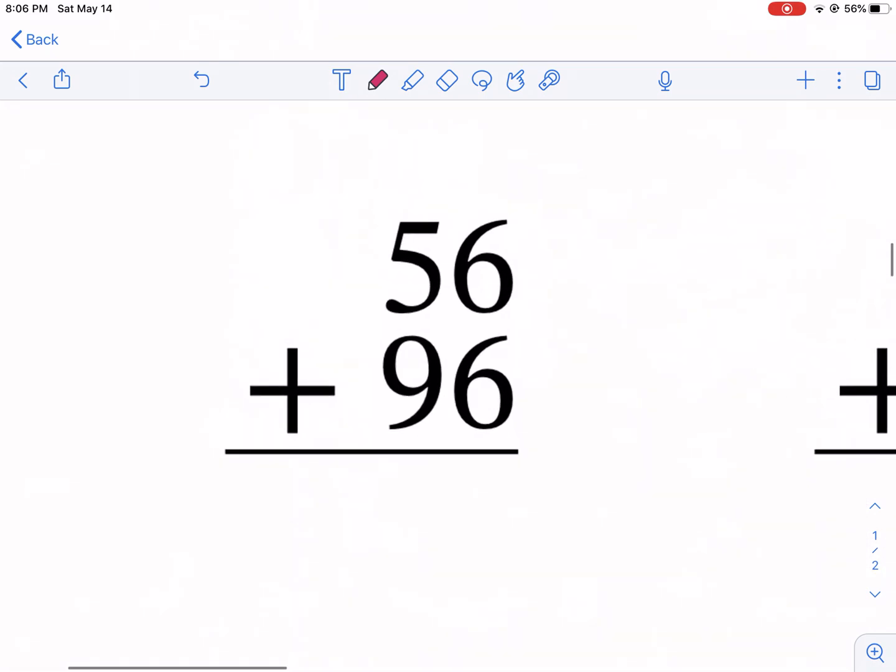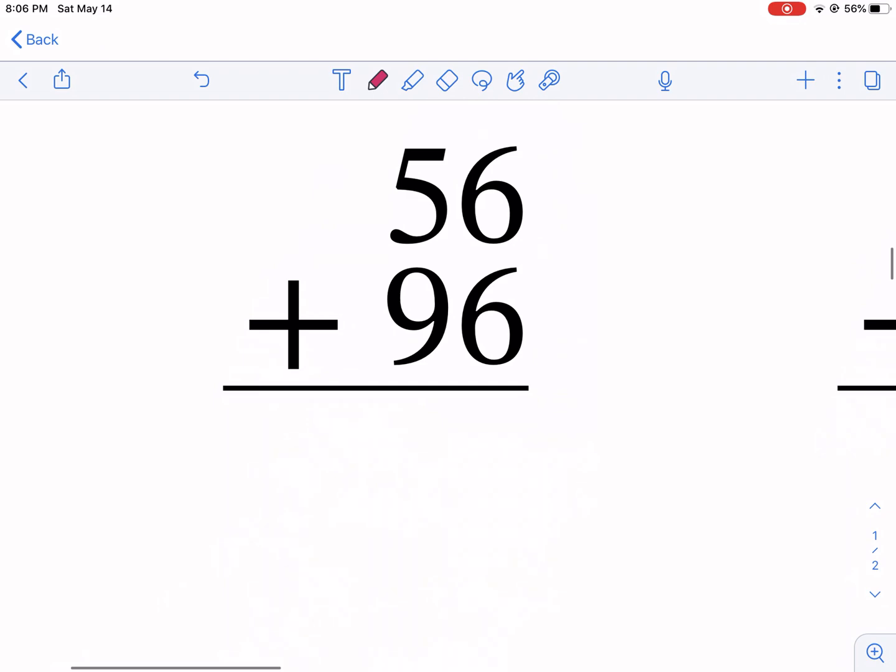Now, here's one that's going to need some regrouping. So, we have 56 plus 96. Now, here we have the answer 12, and this is a mistake I see all the time. I see 12 and then nine plus five. Oh, that's 14. Oh, it's 1,412. That's not the answer.